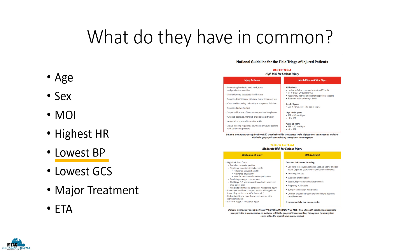For blood pressure, studies have suggested that lower blood pressure in a trauma patient may be indicative of hypoperfusion and is associated with poor patient outcomes. Consider the shock index — an elevated shock index has been shown to correlate with increased likelihood of inpatient admission, mortality, and other outcomes like massive transfusion activation. GCS shows us how well perfused the brain is, if the patient is alert enough to maintain their airway, and if there is potential for injury to the brain.